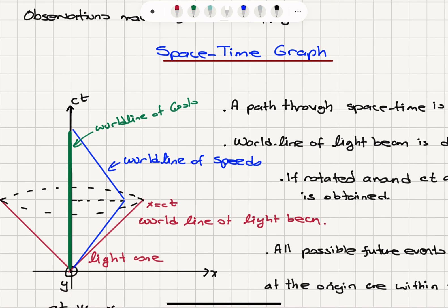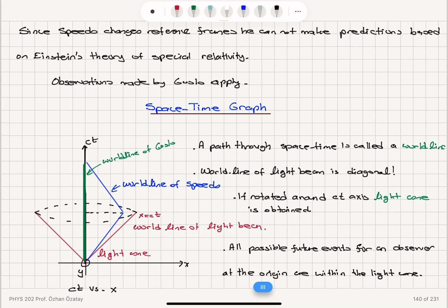How about Speedo? Speedo is changing position, moving on the x-axis, of course not with the speed of light but less — at 0.95c — and then returns to the position of Goslo with the same speed. So the world line of Speedo consists of two lines: the travel to planet X and return to Earth. This ct versus x graph is called the space-time graph, and it represents the evolution of an event within the light cone of the space-time graph.